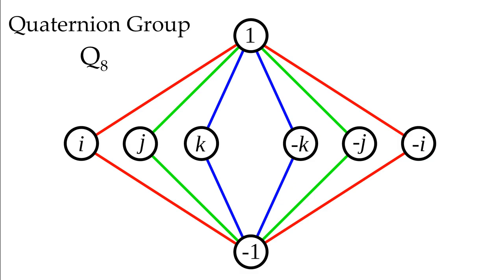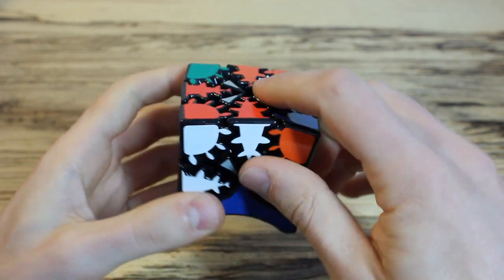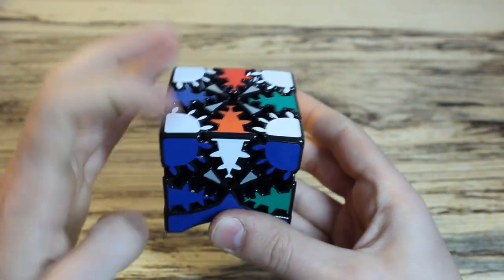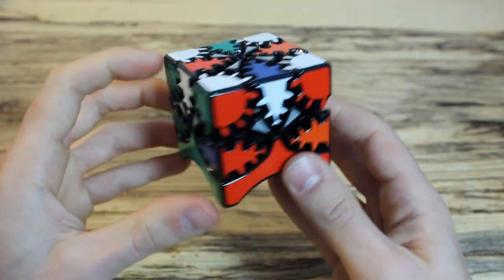There's a cool mathematical object called the Quaternion Group, or Q8, which has broad applications in 3D computer graphics, particle physics, and number theory. Rather than design another difficult puzzle, I wanted to create a way to explore Q8 visually through a geared Rubik's Cube.